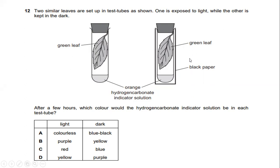Therefore, the color of hydrogen carbonate solution changes from orange to purple. And if you can see from the right hand side, where the green leaf is covered with black paper. Black paper prevents light entering the test tube. Where the rate of respiration is greater than the rate of photosynthesis. So the leaf gives out carbon dioxide, which dissolves hydrogen carbonate indicator solution to change the color from orange to yellow. So the answer for this experiment will be B, where the increase in carbon dioxide will change the indicator to yellow. And the decrease in carbon dioxide changes the hydrogen carbonate indicator solution to purple.